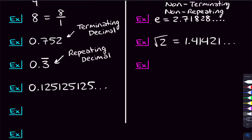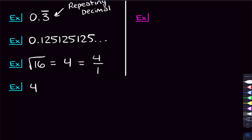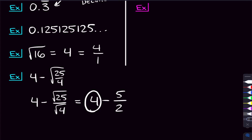But not all square roots are irrational. If you have something like the square root of 16, you can simplify it so the square root is gone — the square root of 16 is 4. And we can write that as 4 over 1, a ratio of two integers. So that's a rational number. You can even have something like 4 minus the square root of 25 over 4. It looks pretty complex, but if we simplify — splitting the square root — we get 4 minus 5 over 2, a rational number minus a rational number, which is still a rational number.